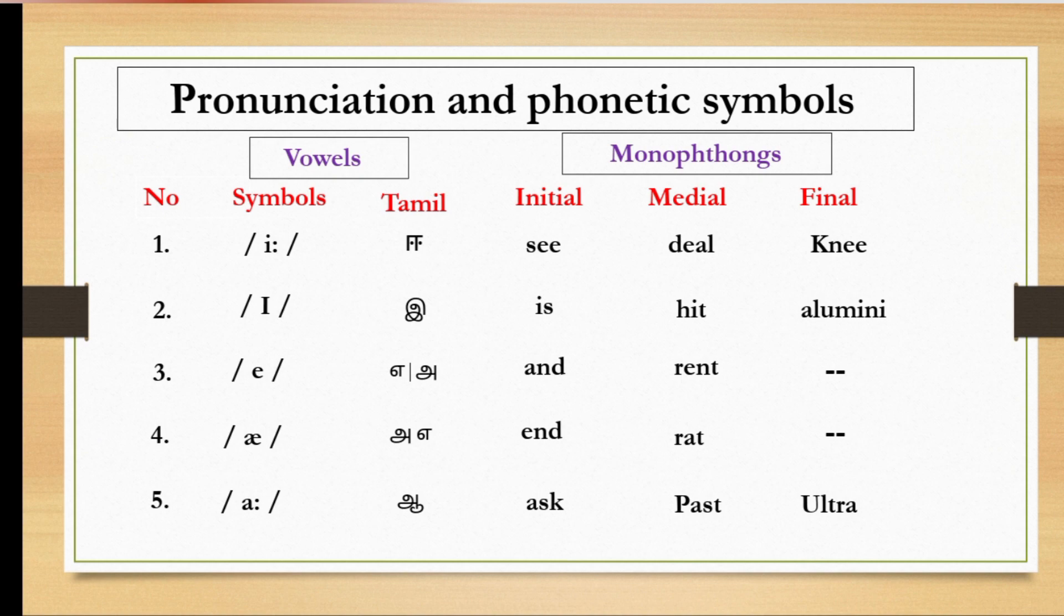Second one, ee, as in is, hit, alumini. Third one, ee, it has two sounds. One is ee, another one is a, as in and. Fourth one, aah, it has two sounds. One is aah, another one is a, as in end. Rat.